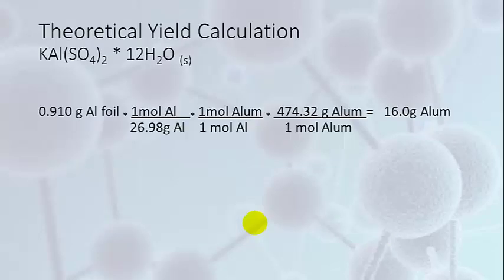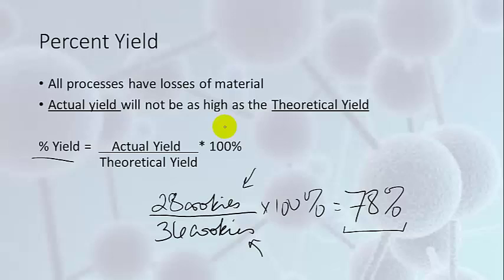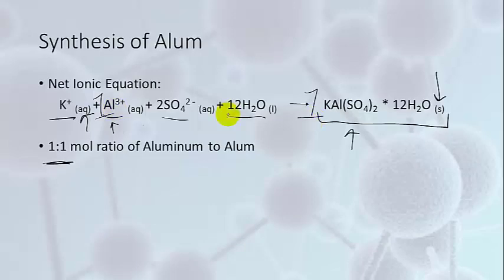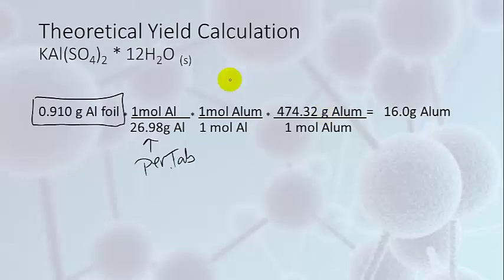What's our theoretical yield for alum? You'll be recording the mass that you start out with of your aluminum foil. You can change grams into moles using the gram formula mass from the periodic table. This is from the periodic table. Remember that we have the one to one mole ratio in our equation of aluminum to alum.